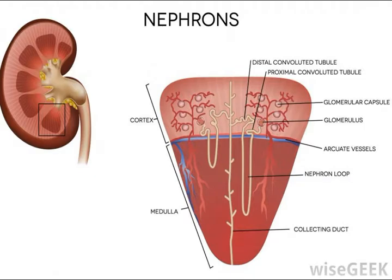Transcytosis is necessary for macromolecules to be reabsorbed into the blood. A macromolecule is a very large molecule or compound that cannot easily pass through cell membranes. Transcytosis uses vesicles for molecule transport. The vesicle containing the macromolecule forms on one side of the cell, travels across the cell, and expels the macromolecule into the adjacent cell.